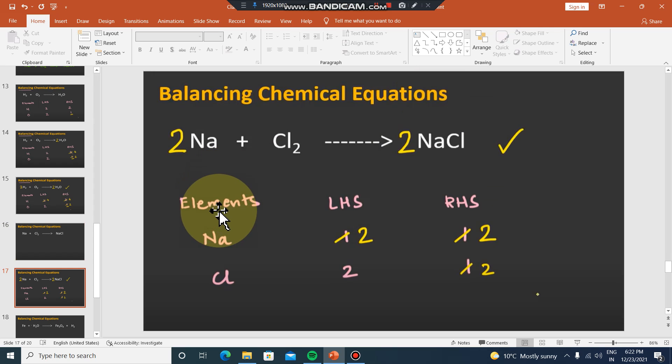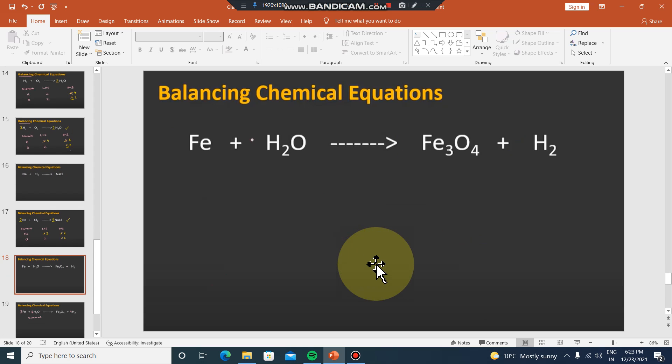The elements on the left-hand side: sodium 1, left-hand side chlorine 2. Right-hand side sodium 1, right-hand side chlorine 1. So the balance is 1, 1, 2, 1. The 1 to 2, and 2. So we have sodium here, 2. So 2, and sodium on the right-hand side 2. So the balance.